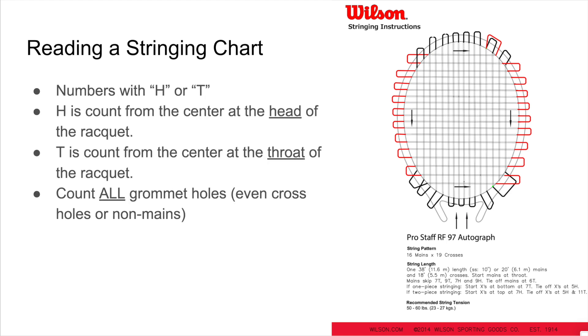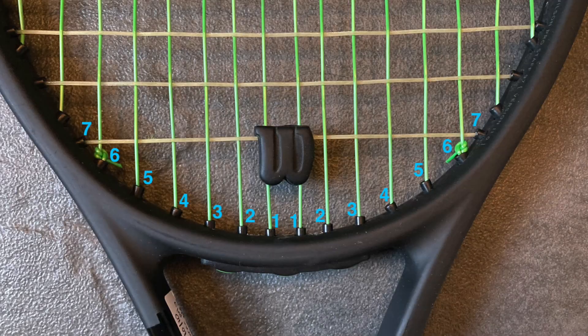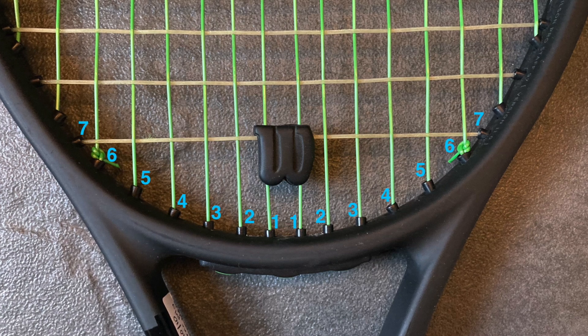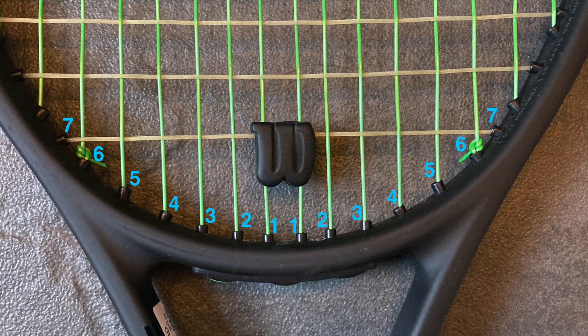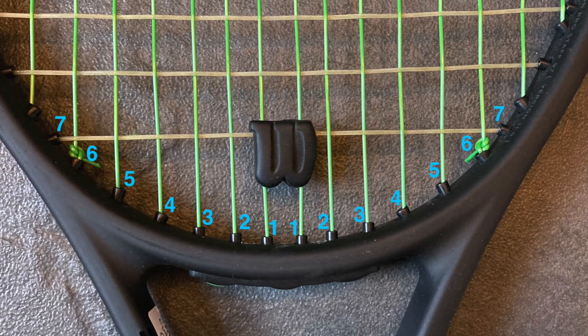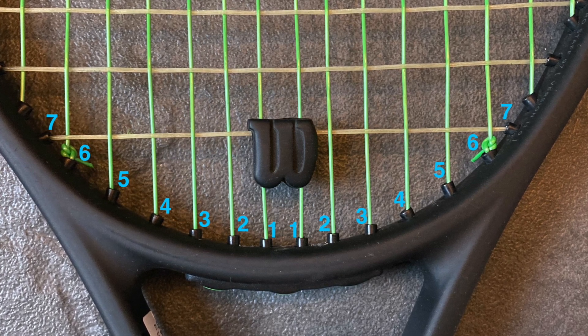What about the H's and T's? For those in the medical world, they may remember the H's and T's of ACLS as a way of thinking about causes of cardiac arrest. But in the tennis world, H stands for head, which is the tip of the racket, and T stands for throat, which is down by the grip. So the numbering system will give a numbering of the grommet at either the head or the throat of the racket. Of course, you need to remember that the numbering system counts all grommet holes from the center main string, so make sure you don't skip over any, particularly the crosses when counting.